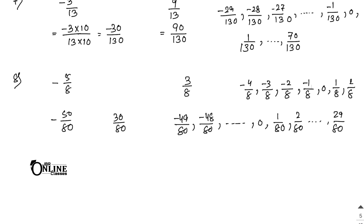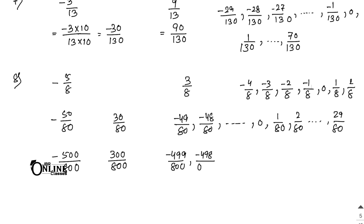For 600 rational numbers, multiply by 100 — so -5/8 becomes -500/800 and 3/8 becomes 300/800. Then write -499/800, -498/800, … 0, 1/800, 2/800, … up to 299/800. That gives you 600 rational numbers.